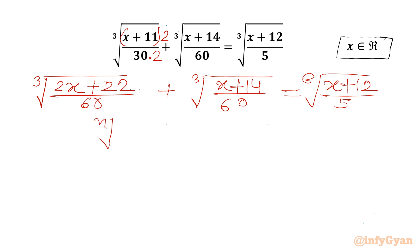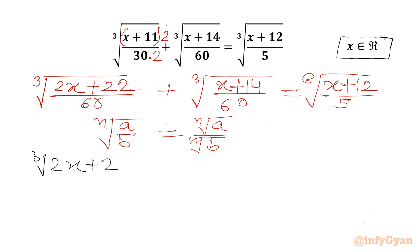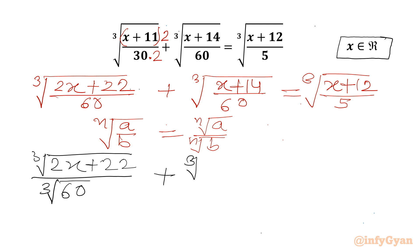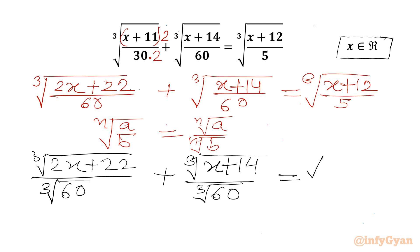Now using the property from radicals — nth root of (a over b) we can write as nth root of a over nth root of b. So I can write our equation as cube root of (2x plus 22) over cube root of 60, plus cube root of (x plus 14) over cube root of 60. And the RHS will split: cube root of (x plus 12) over cube root of 5.